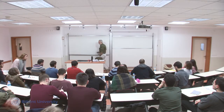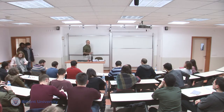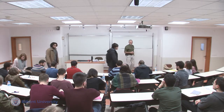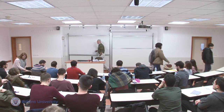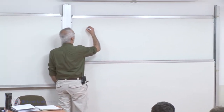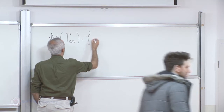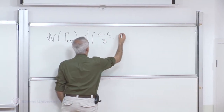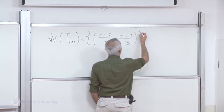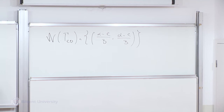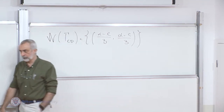Let me start with the question we left last lecture. We investigated the Cournot duopoly and found the Nash equilibria using two methods: directly using the profit function and also using indifference curves. The Nash equilibrium we found for the Cournot duopoly was when both firms produced alpha minus c over 3.